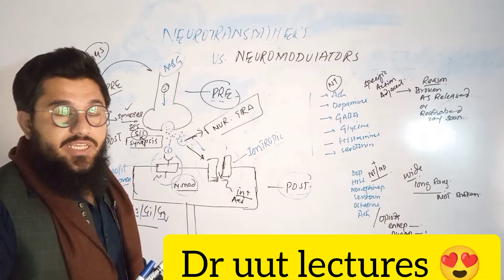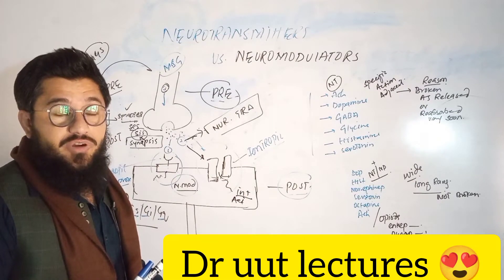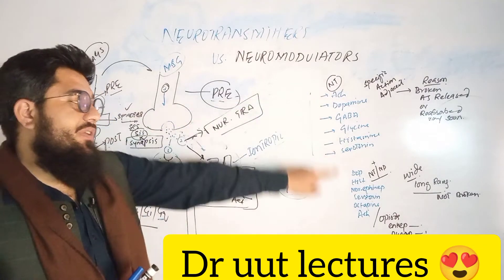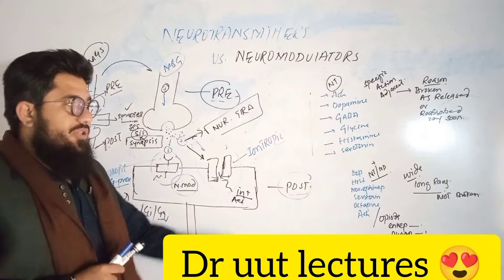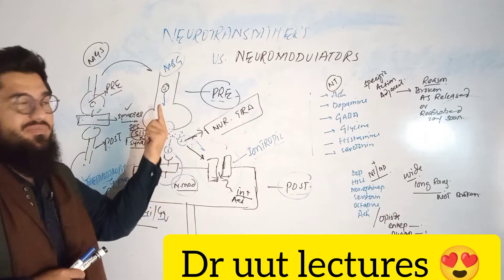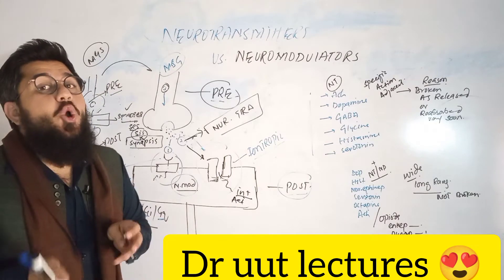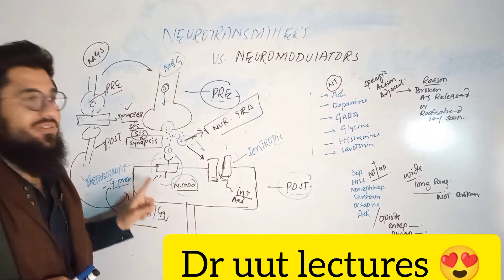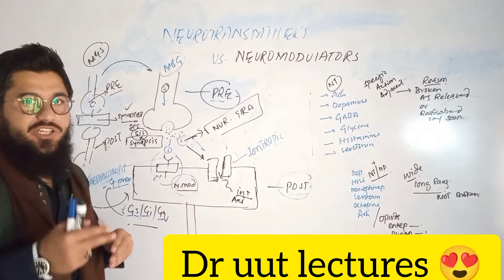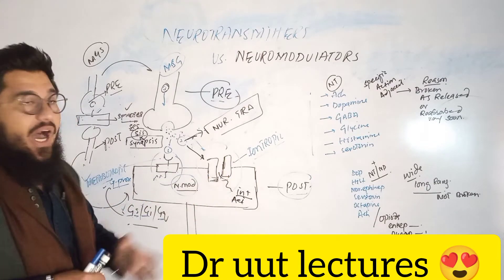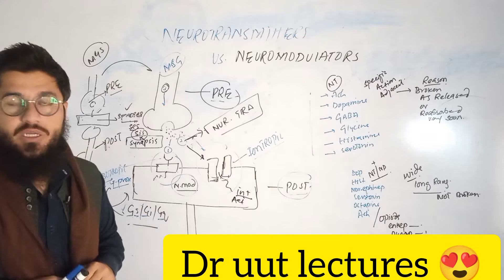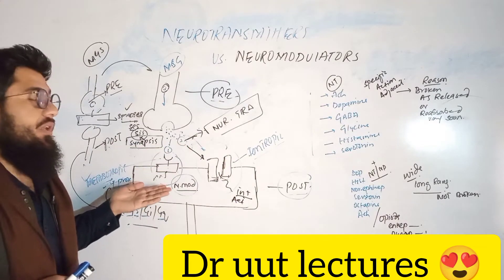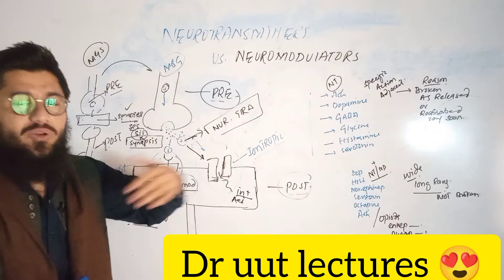Certain chemicals can be both neurotransmitters and neuromodulators. Acetylcholine is a clear example. The same acetylcholine sometimes binds with metabotropic receptors and sometimes with ionotropic receptors. If a slow action is needed, acetylcholine goes toward the metabotropic receptors because they produce a slow type of action. If acetylcholine binds with ionotropic receptors, a quick action is shown. If it binds with metabotropic receptors, a slow and long-lasting action results.